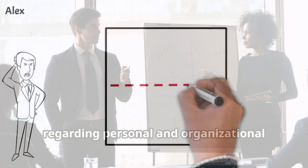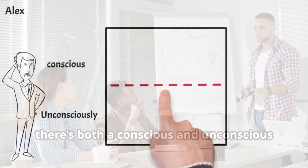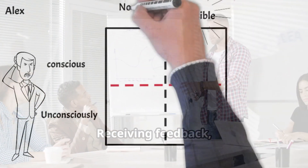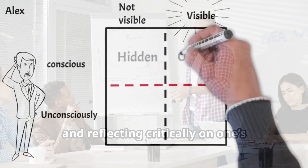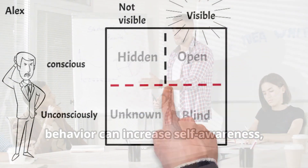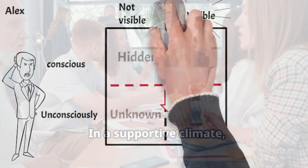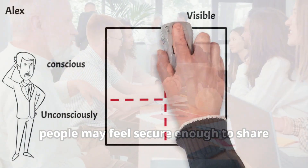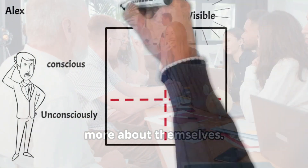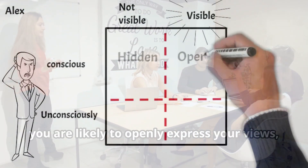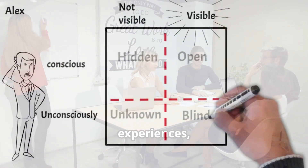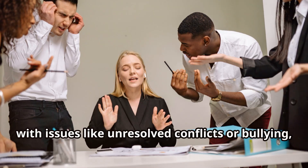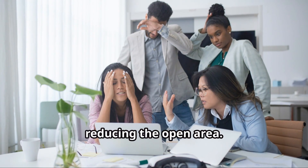Regarding personal and organizational development, as the model shows, there is both a conscious and unconscious part of our psyche. Receiving feedback, engaging in personal development, and reflecting critically on one's behavior can increase self-awareness, expanding the open area. In a supportive climate, people may feel secure enough to share more about themselves. With psychological safety, you are likely to openly express your views, experiences, and ideas. Conversely, in a defensive climate with issues like unresolved conflicts or bullying, individuals will share less, reducing the open area.